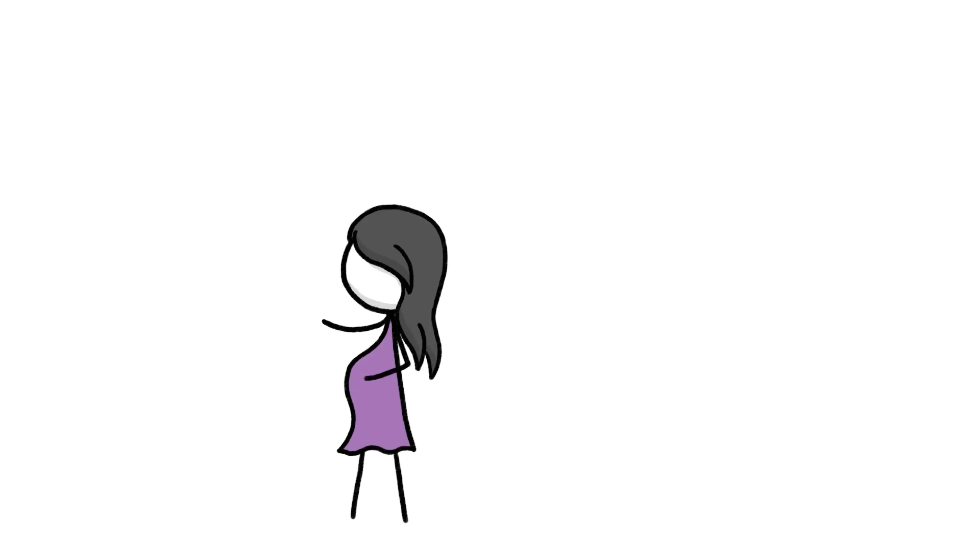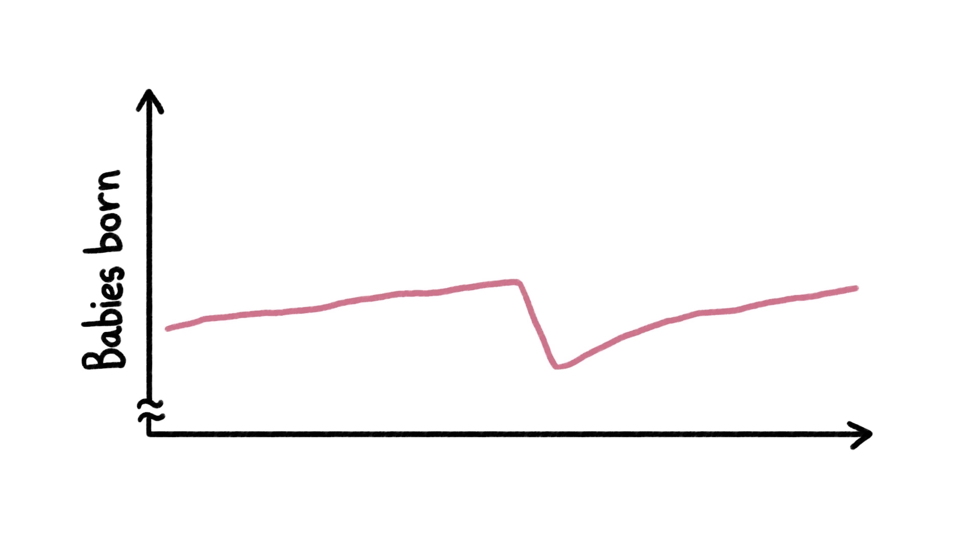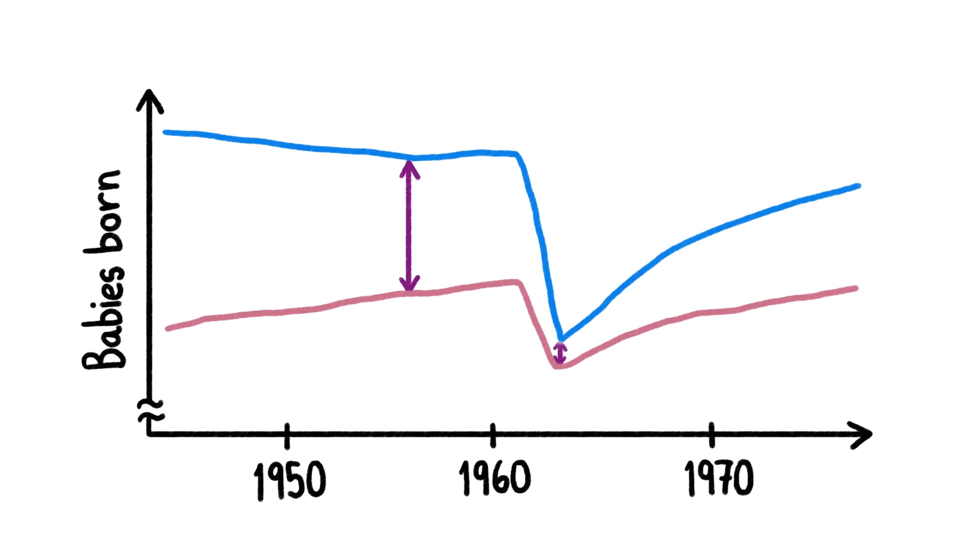But the likelihood of a boy even making it to birth is also influenced by his mom's living conditions during pregnancy. For example, when a massive famine struck China in the 1960s, the relative likelihood of having a son suddenly dropped, until the famine ended.